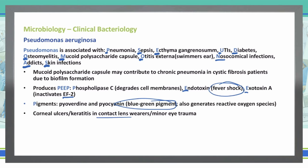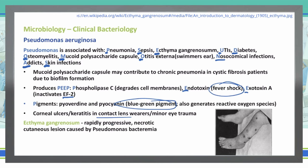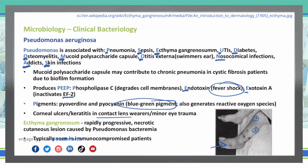Minor eye trauma can also cause some of that if it gets infected with this particular bacteria. We also mentioned ecthyma gangrenosum — that is a necrotic cutaneous lesion caused by Pseudomonas. You can see in this picture some lesions on this patient all over the legs. It is a rapidly progressive necrotic lesion caused by Pseudomonas, and we often see these in patients that are immunocompromised.